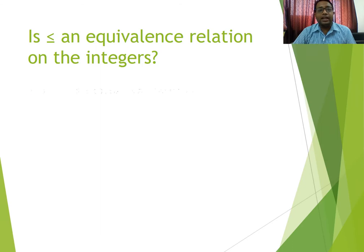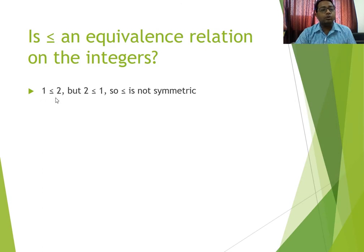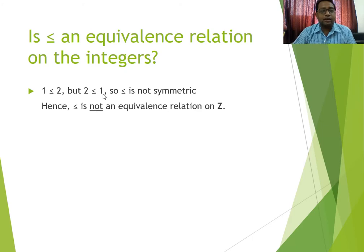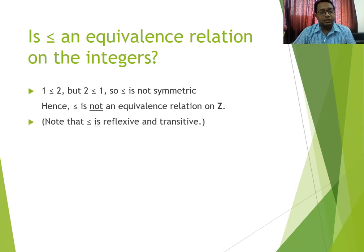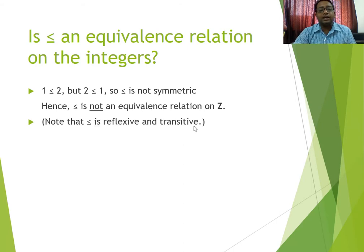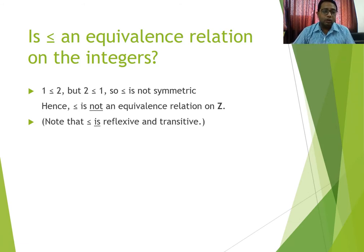Ab equality ki jagah agar hum less than or equal to lein, toh dekhein kya hoga. 1 ≤ 2 hai, but kya aap yeh keh sakte hain 2 ≤ 1? No. So it is not symmetric. Hence, the less-than-or-equal-to relation is not an equivalence relation. However, it does satisfy reflexivity — a ≤ a for every a — and transitivity — if a ≤ b and b ≤ c, then a ≤ c.